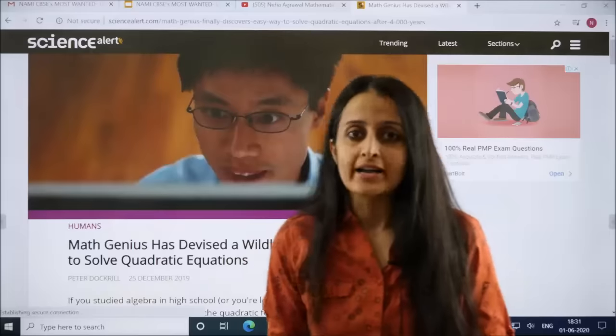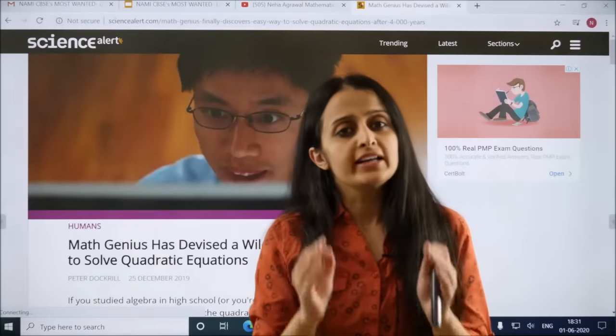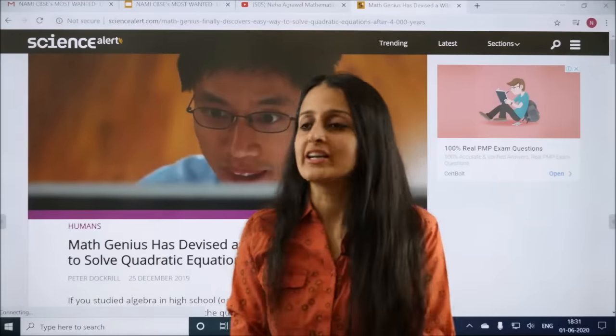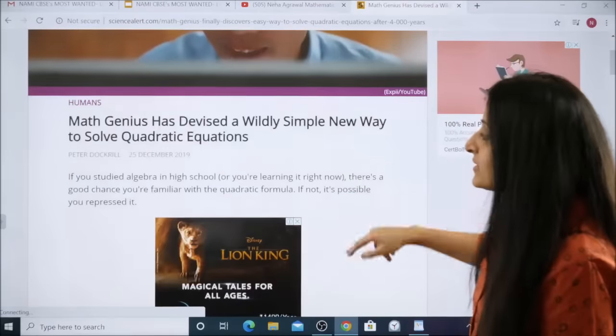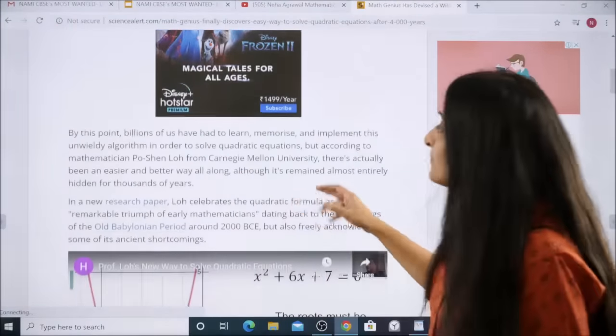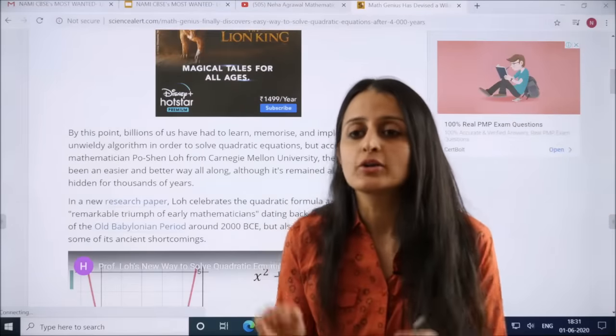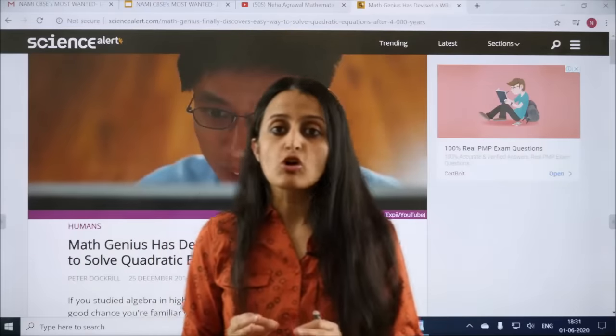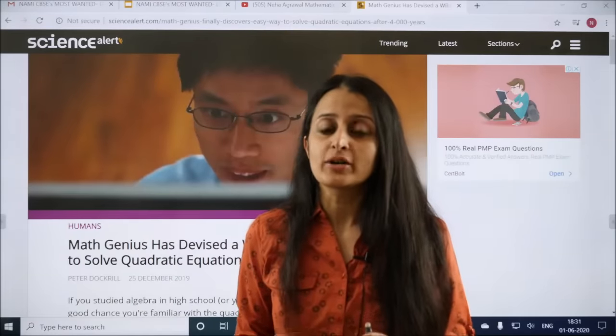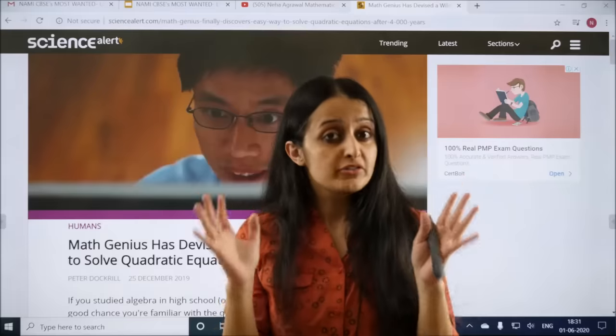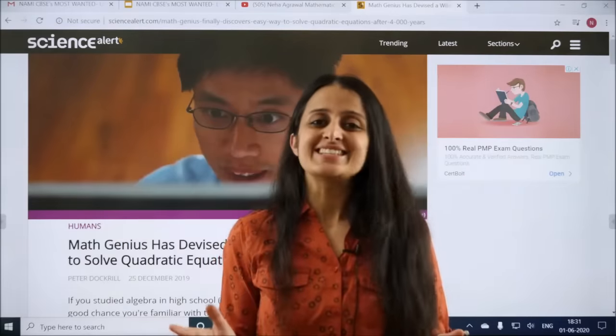But before I go ahead and start with the method I definitely need to give the credit to the one who actually worked on it. Yes this person a mathematician called Po-Shen Loh from Carnegie Mellon University is the one who has been able to crack this method in which you can solve any kind of quadratic equation whether with real roots or complex roots super fast. So let's get started.